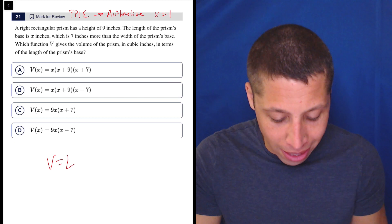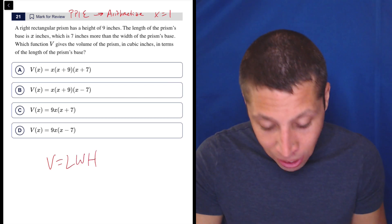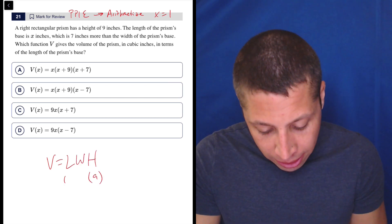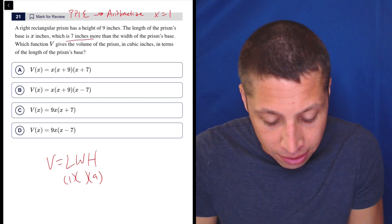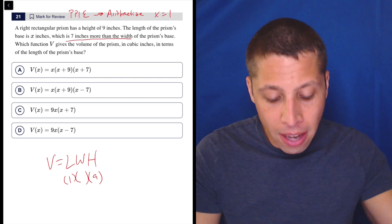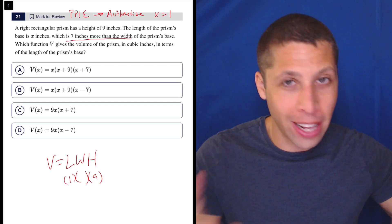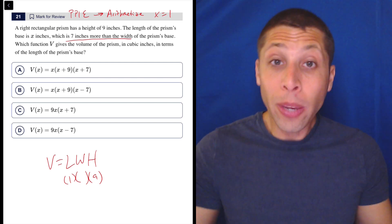So my volume is length times width times height. We have the height, right? We need the length and the width. So I just made up the length is one. But then if I read this, one is seven inches more than the width. That doesn't make any sense, right? Because then the width is negative six. So that's okay.